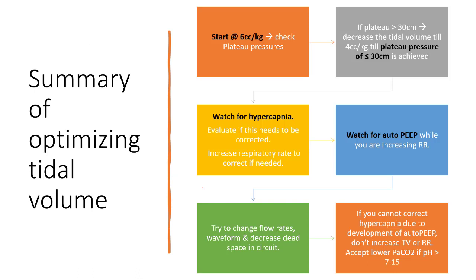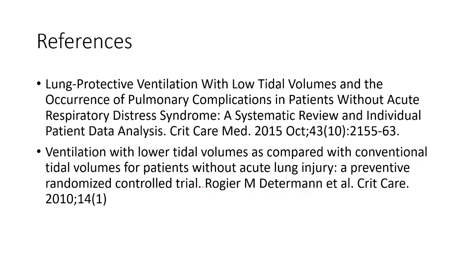In final summary: start at 6 cc per kg, check plateau pressures, and keep dropping the volume until plateau pressure is less than 30 cmH2O. Watch for hypercapnia and monitor flow-time loops. If hypercapnia occurs, increase respiratory rate while observing for auto-PEEP. If auto-PEEP develops, try changing flow rates or waveform to allow extra exhalation time. If you cannot correct hypercapnia, do not increase tidal volume or rate — accept a lower PaCO2 if pH is more than 7.15. In difficult situations, ECMO for CO2 removal can be considered.